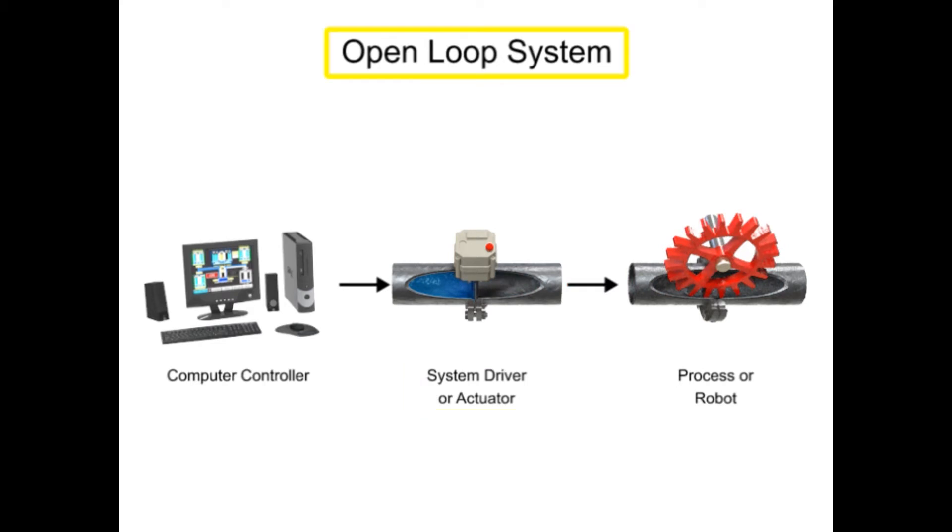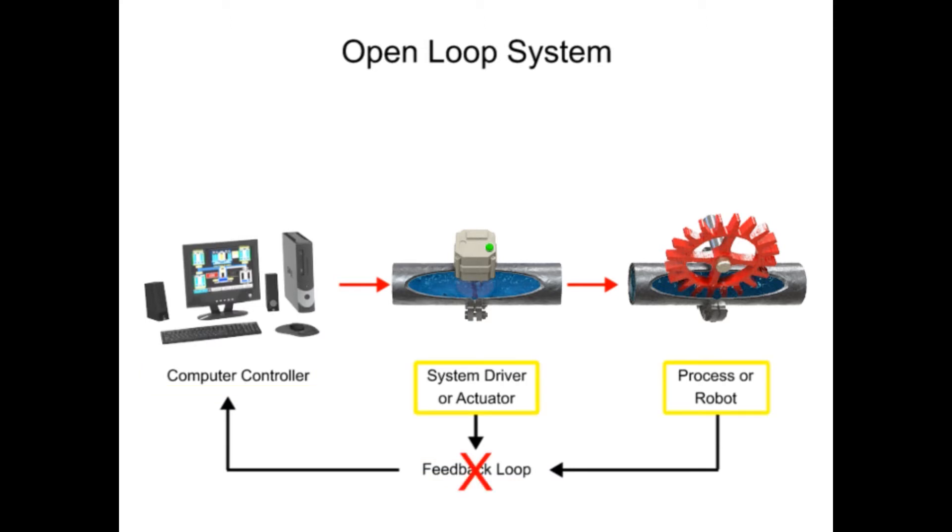In open-loop systems, the program length of time the signal is applied, as well as the integrity of the signal, are critical for ensuring that the new operation is completed. This is because there is no feedback to the computer from the system driver or the robot, and thus no updates to the signal outputs can be made.